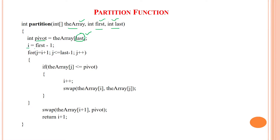We assume i equals first minus 1. Since first index is 1, i will become 0. Then j starts from i plus 1, so j is 1. J iterates while j is less than or equal to last, which is n. Since the pivot element is the last index, we must move only until prior to the pivot index, so j goes up to n minus 1.